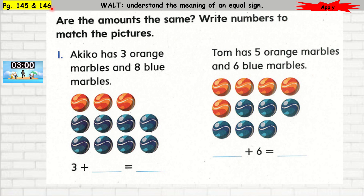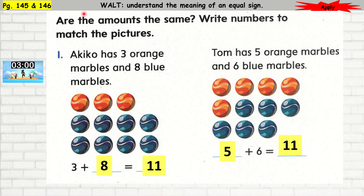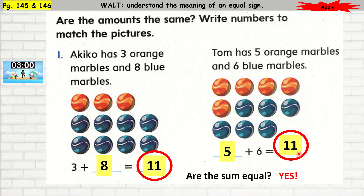Open to page 145 and 146 in your book. Question number 1: Kiko has 3 orange marbles and 8 blue marbles. The missing number is 8. 3 plus 8 — count all the marbles — is 11. On the other side, Tom has 5 orange marbles and 6 blue marbles; the missing number is 5, and 5 plus 6 is equal to 11. Are the amounts the same? Yes, the sums are equal — both are 11.